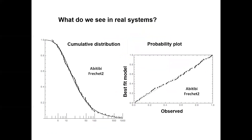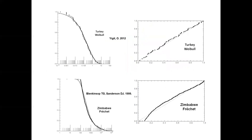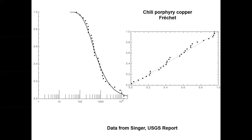What do we see in real systems? Here's a plot from the Abitibi, and you can see that the Abitibi distribution at the regional scale follows very nicely a Fréchet distribution, both in the cumulative distribution on the left and the probability plot on the right. The Turkey data from yoghurt again follows a Weibull distribution. The Blenkinsop distribution from Zimbabwe follows a Fréchet distribution. For Chile copper — data from Singer — it follows very nicely a Fréchet distribution, except right at the end where the last four, the biggest four deposits, are slightly divergent from the Fréchet distribution.